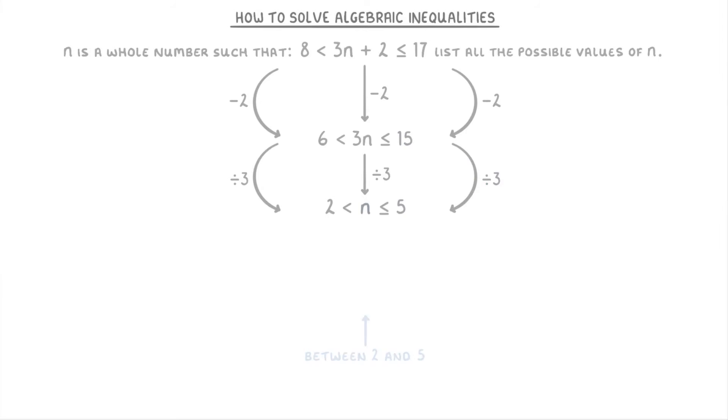At this point we know that n has to be between 2 and 5, and can also be 5 itself. So because we were told in the question that n is a whole number, we know that the only possible values of n are 3, 4, and 5.